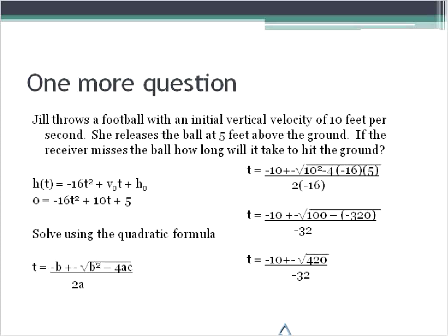This is, again, the point where I would take out my calculator, punch in the values, and get the results. The results are that time is either equal to negative 0.3 or positive 0.95 seconds. Because time can't really be measured in a negative number, we're going to take the positive number of 0.95 seconds, or about one second, and say, if the receiver misses a ball, it will take about 0.95 seconds for it to hit the ground.